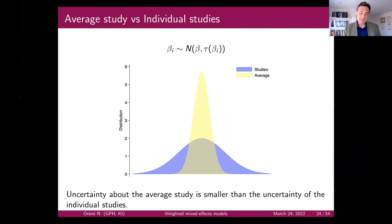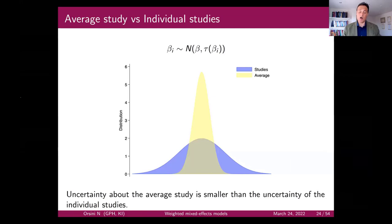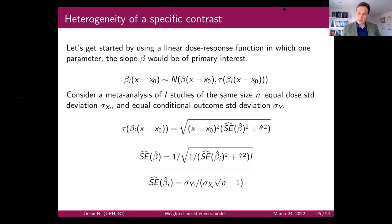There has also been a recent attempt to combine dose-response meta-analysis with network meta-analysis with or without a Bayesian approach. Georgia has been working a lot on trying to put together network meta-analysis and dose-response — an active area of current research.